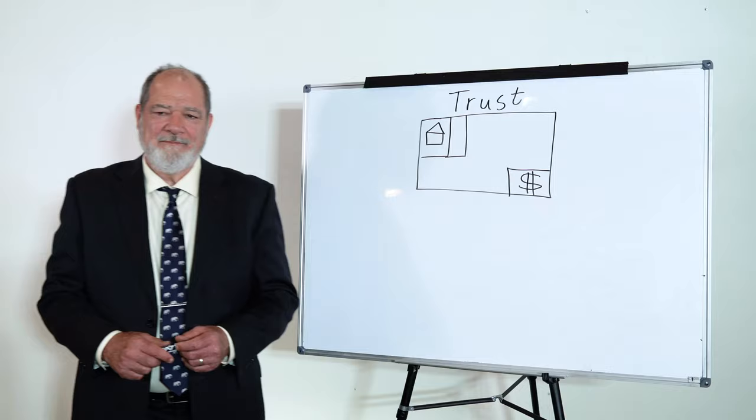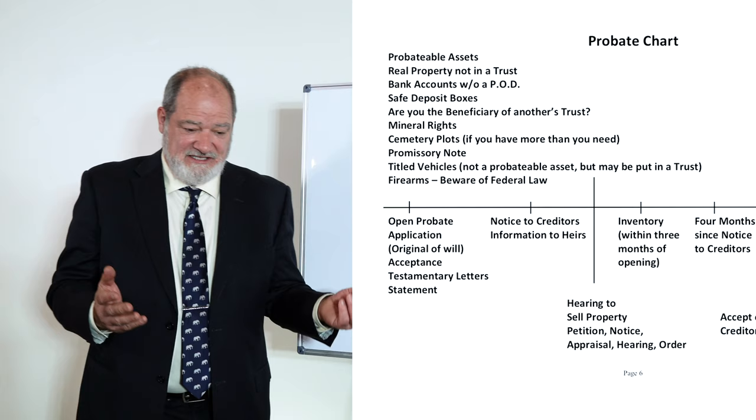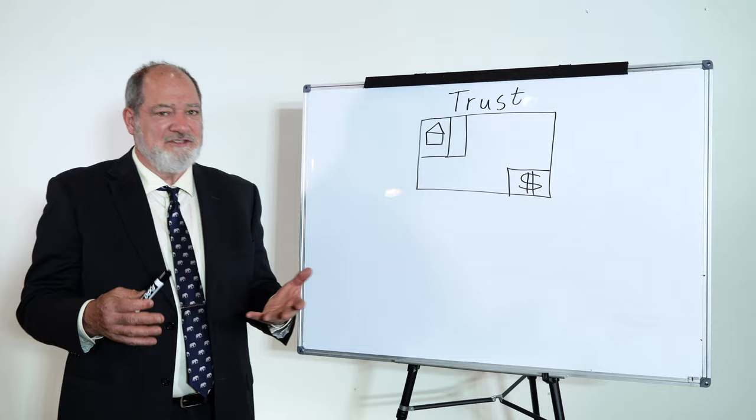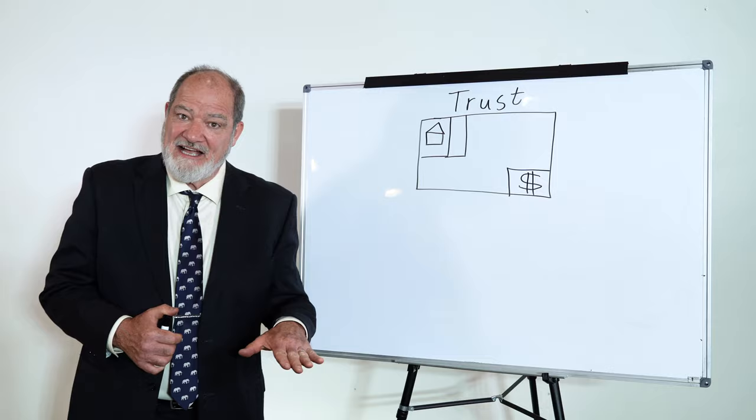As we continue our discussion of how to avoid a probate by putting our probatable assets into the trust, the next thing on our list is safe deposit boxes. If you have a safe deposit box and just you in singular, or you and your spouse are the only owners of that safe deposit box, the only way your children can get into that safe deposit box is with testamentary letters. In other words, we're in probate land again. So there's two options you have: either make one of your children a co-owner of that safe deposit box, or better still, just don't have one.